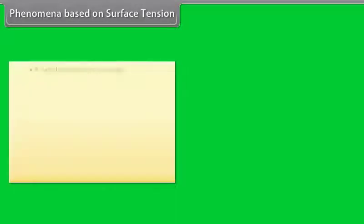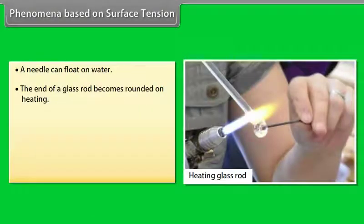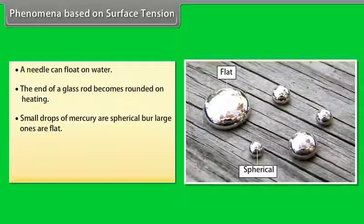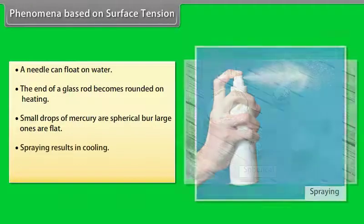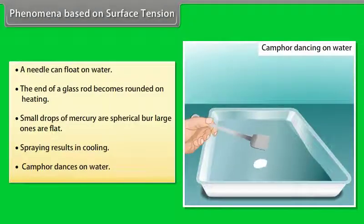Phenomena based on surface tension. A needle can float on water. The end of a glass rod becomes rounded on heating. Small drops of mercury are spherical but large ones are flat. Spraying results in cooling. Camphor dances on water.